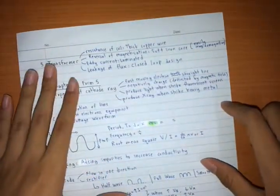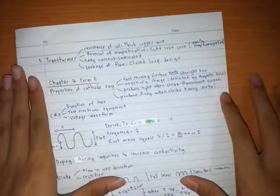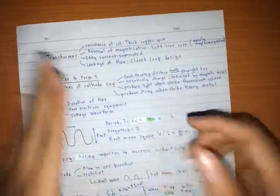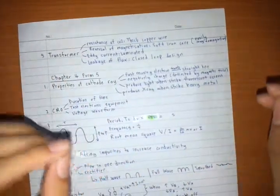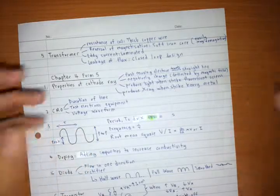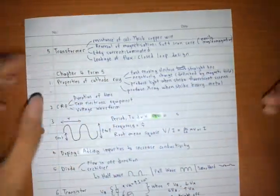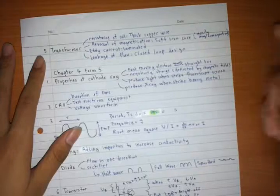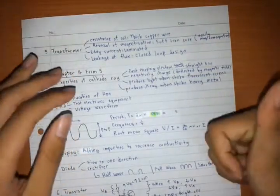The others are just for your information, or in case you need to write five of them, so it's like it produces light when it strikes a fluorescent screen, which is exactly what your lamp is made of, you know, all those long tubes, it's a fluorescent screen. So they heat the cathode ray and it becomes white light.